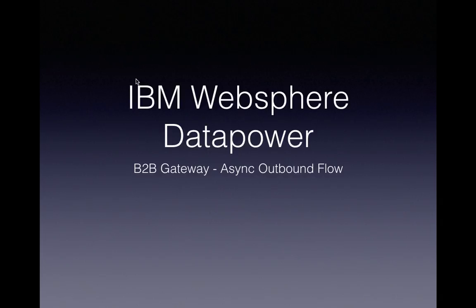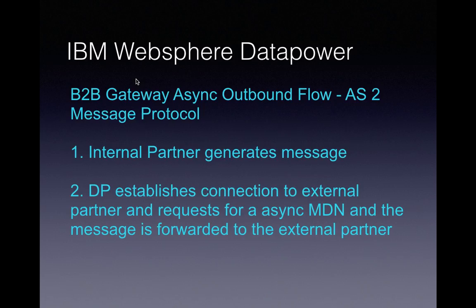Hello everyone, this is Karthik Salvaraj, and in this IBM WebSphere DataPower tutorial we will be seeing about asynchronous outbound flow. For this example we will use the AS2 protocol. AS2 is the transferring of B2B messages over HTTP. When we say outbound flow, it is from the internal partner to an external partner using DataPower.